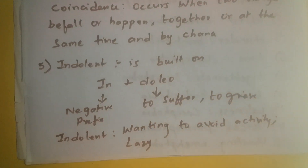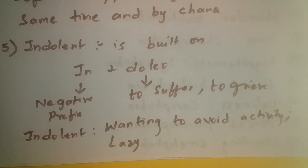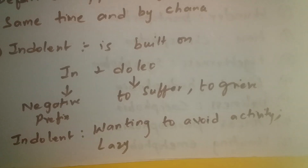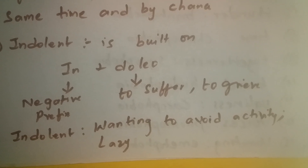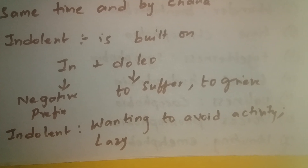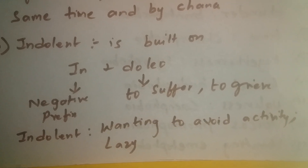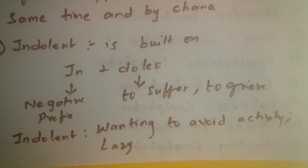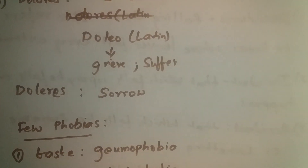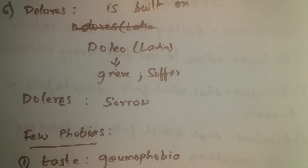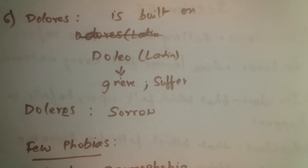Indolent is built on 'in' plus 'dolio.' 'In' is a negative prefix; 'dolio' means to suffer. So the negative of suffer means you are wanting to avoid activity — that is, you are trying to become lazy. Dolores is also built on 'dolio,' which is a Latin word, so dolores means sorrow.